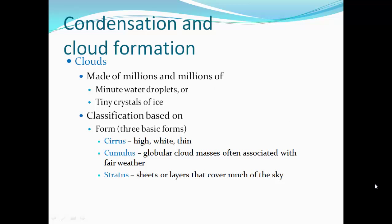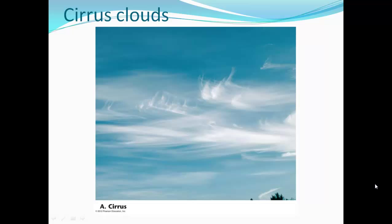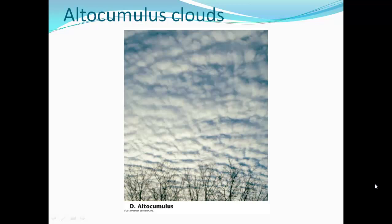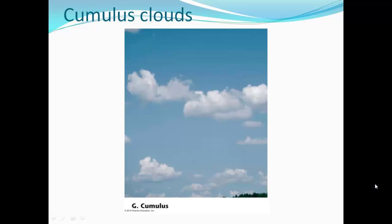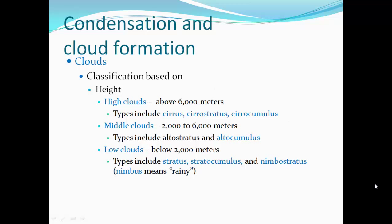Clouds are made of millions of minute water droplets or tiny crystals of ice. We classify clouds based on their form and shape. There are three basic shapes: cirrus are high, white, thin clouds; cumulus are globular cloud masses often associated with fair weather; stratus are sheets or layers that cover much of the sky. Here are cirrus clouds, nice and wispy. Here are altocumulus clouds — cumulus refers to globular shapes. And here are cumulus clouds — nice globular, cotton puffy clouds.